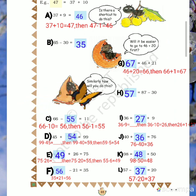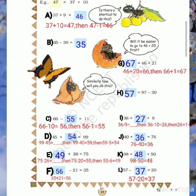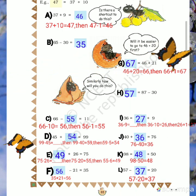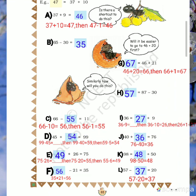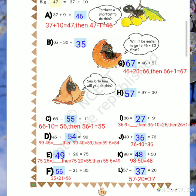Now look at G: dash equals 46 plus 21. You need to add 21 to 46. First add 20: starting at 46, adding 20 brings you to 66. Then add one more. The answer is 67.